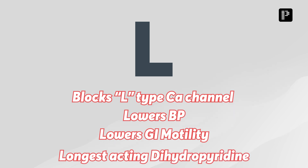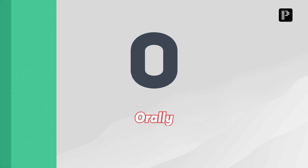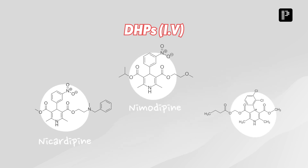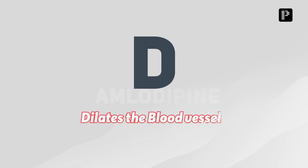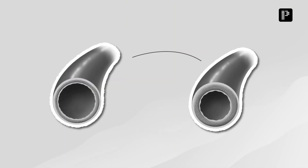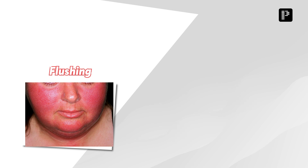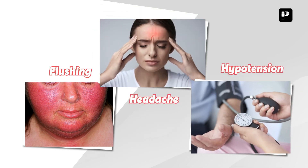Another important aspect of L is it's the longest-acting dihydropyridine. O — the drug is given orally. Are there any CCBs which are given IV? Yes, the dihydropyridines given IV are nicardipine, nimodipine, and clevidipine. D — dilates the blood vessels, so because they dilate the blood vessels, the adverse effects of amlodipine will be flushing, headache, and decrease in BP, that is hypotension.